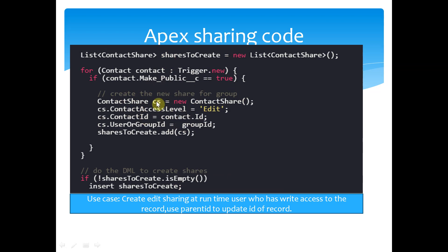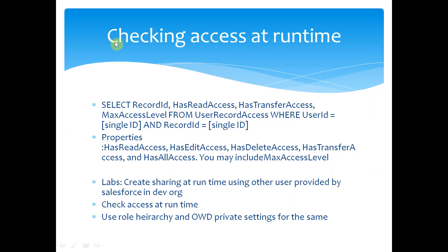So what is happening at runtime is you're going to do the sharing here. Each object has a share object within the sharing rule. Every new record which is coming in is getting shared based on a flag called 'make public' — a custom field. You create a new ContactShare, give the access level (read-only, read-write), specify the object record that needs to be shared, and the user or group to share with. You have to query the group ID from Groups. Then you add it to the list and create it. That is sharing rules.